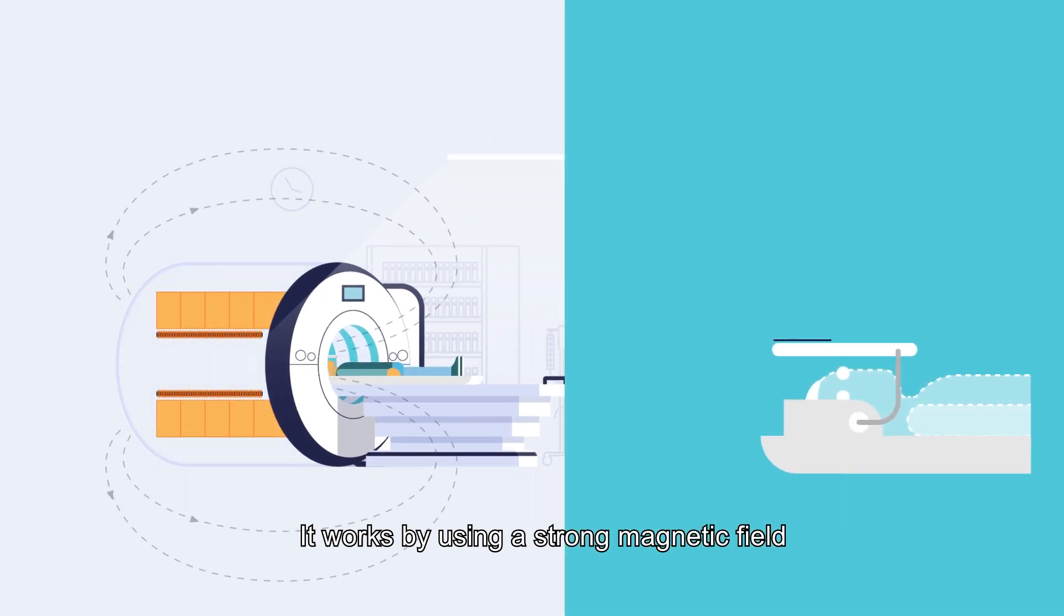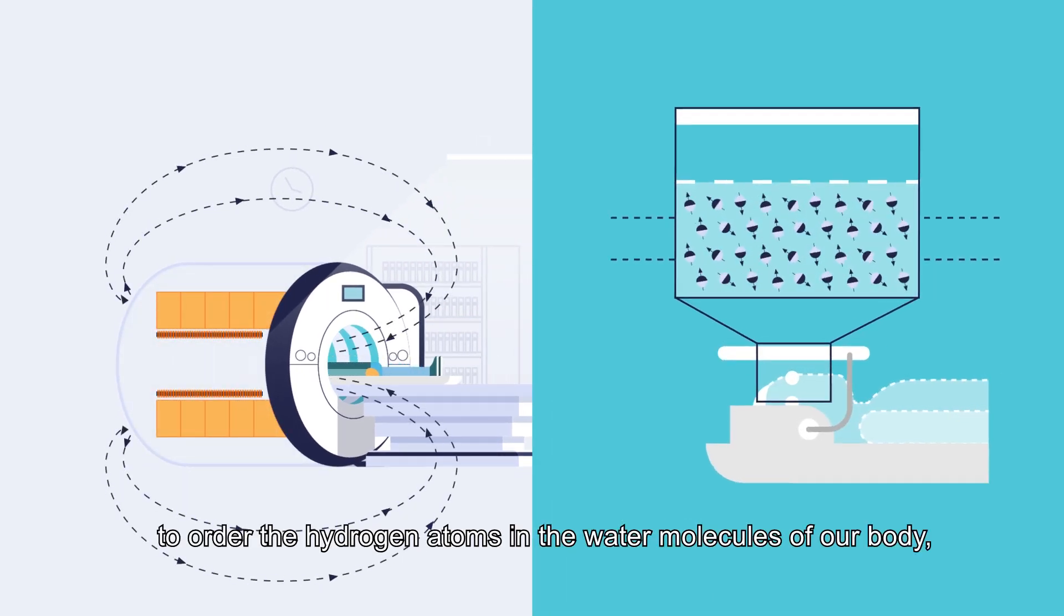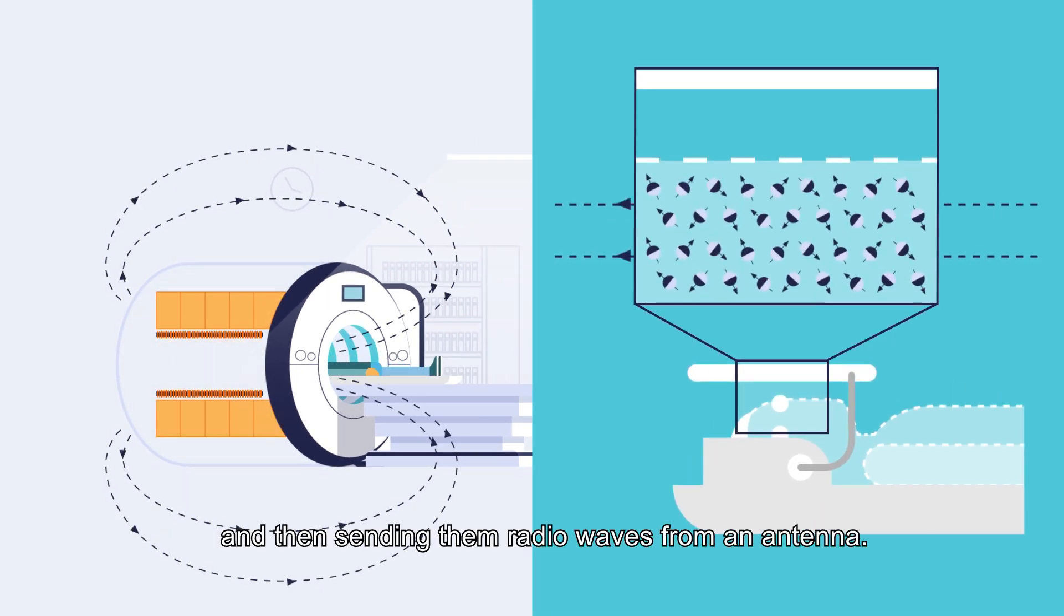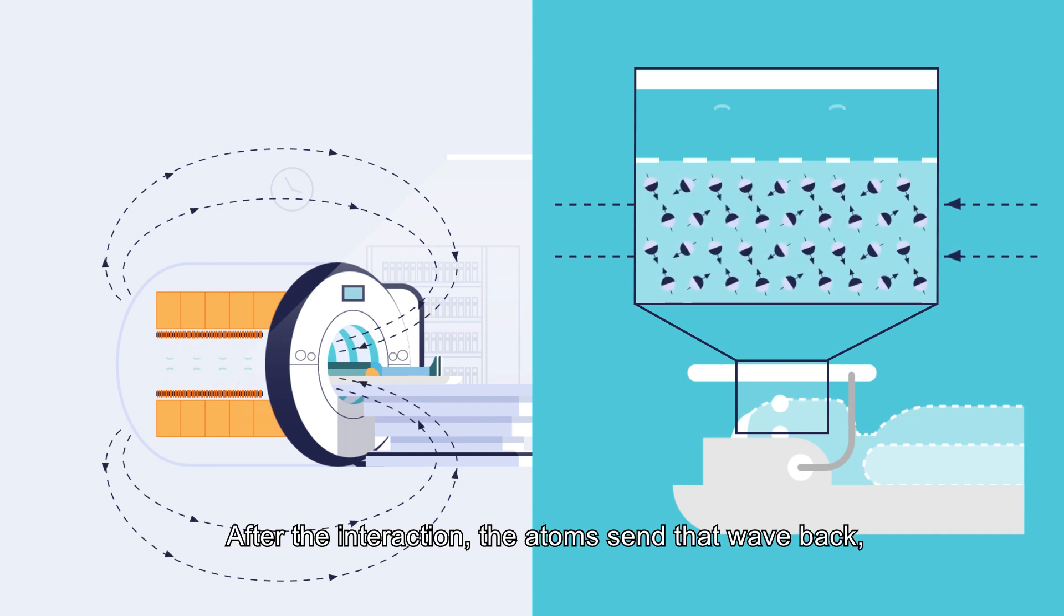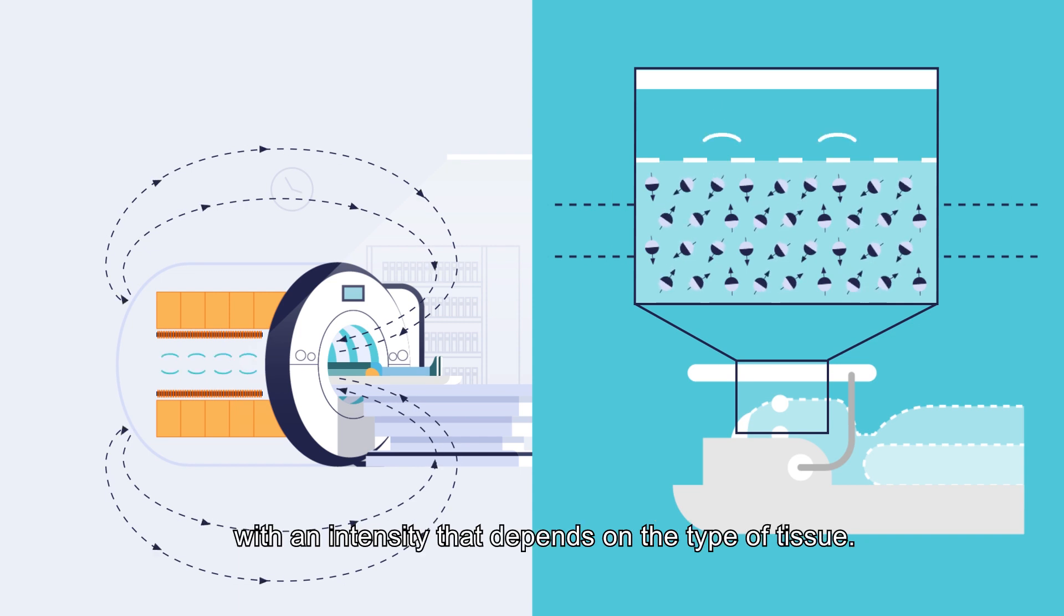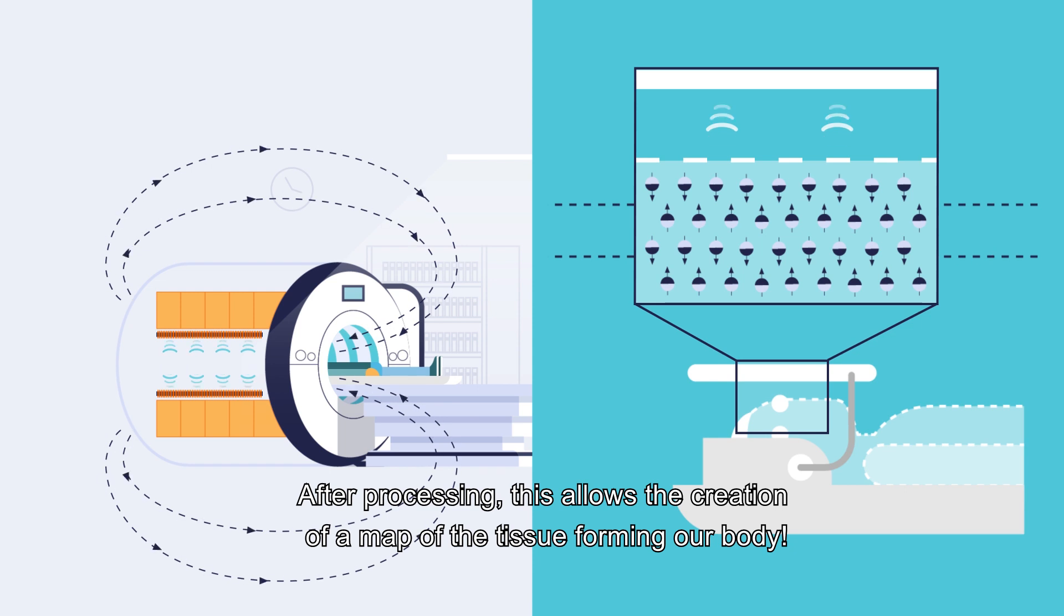It works by using a strong magnetic field to order the hydrogen atoms in the water molecules of our body, and then sending them radio waves from an antenna. After the interaction, the atoms send that wave back with an intensity that depends on the type of tissue. After processing, this allows the creation of a map of the tissue forming our body.